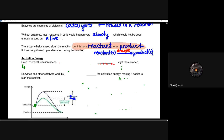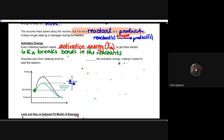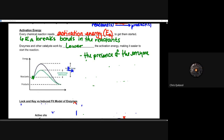Activation energy is the amount of energy needed to get a chemical reaction started — it breaks the bonds of the reactant. Since enzymes are meant to speed things up, they work by lowering the activation energy, making it easier to start that reaction. The presence of an enzyme drastically reduces the activation energy needed to start a reaction.